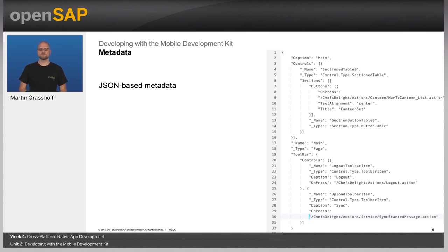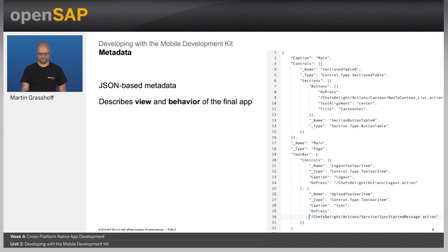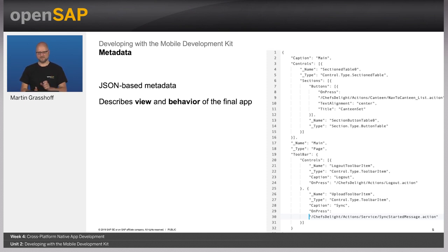Welcome to week 4, Unit 2. In the previous unit, I provided an introduction to the Mobile Development Kit. In this unit, I will show you how to develop with the MDK. There are two ways to create Mobile Development Kit applications. One is to use the mobile service app development tools in the SAP Web IDE full-stack version, which has a layout designer but no debugging capabilities — it is still a very nice low-coding environment. The other option is to use Microsoft Visual Studio Code, where we provide a plug-in that lets you develop MDK applications and debug on your device, though it does not provide a layout designer.